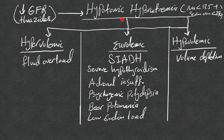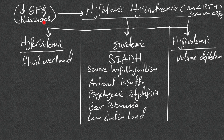Hypotonic hyponatremia — sodium less than 135 with serum osmolality less than 270 — is by far the most common and most challenging in clinical practice. First, check whether the patient has renal failure, decreased GFR, or is on thiazide diuretics, as these alone may explain the finding. Next, check volume status. If the patient has signs of fluid overload or hypervolemia, that's your diagnosis — no further workup needed; treatment will be diuretics.